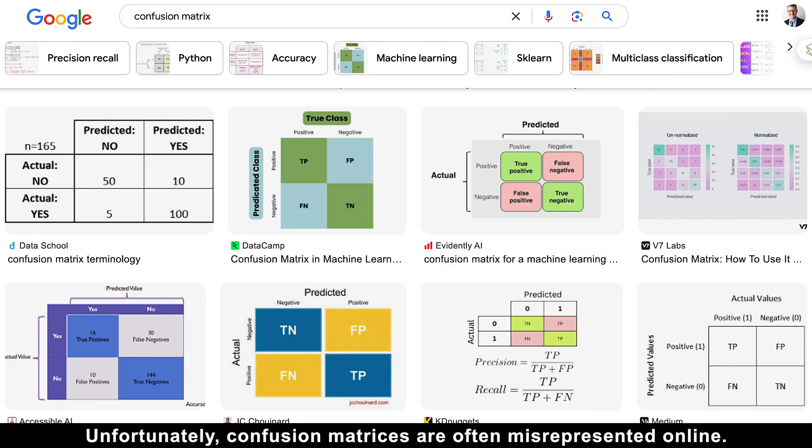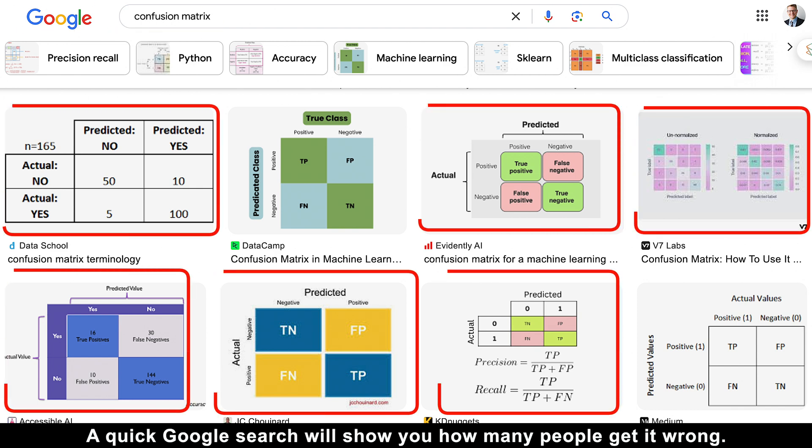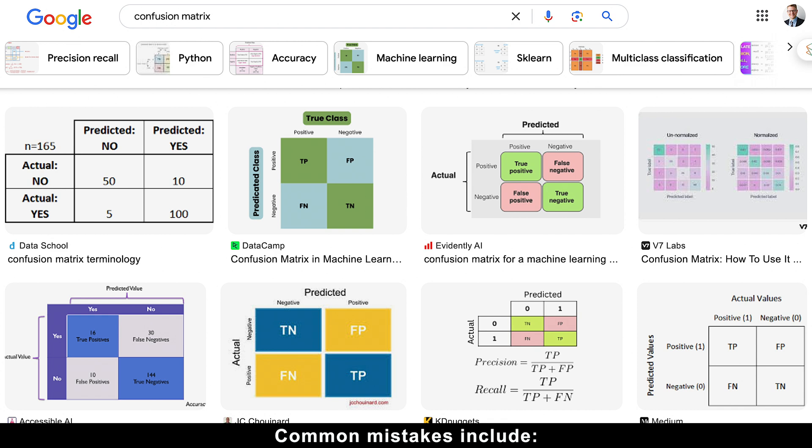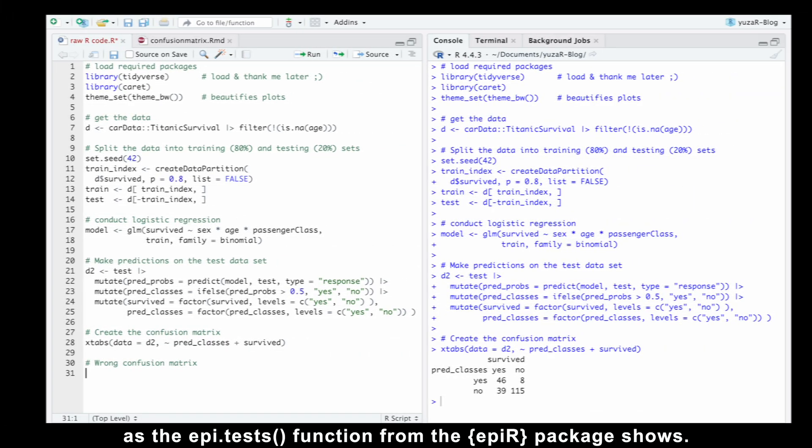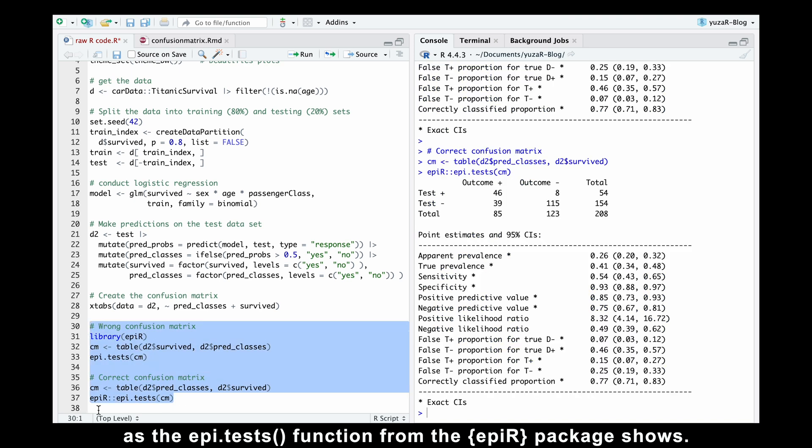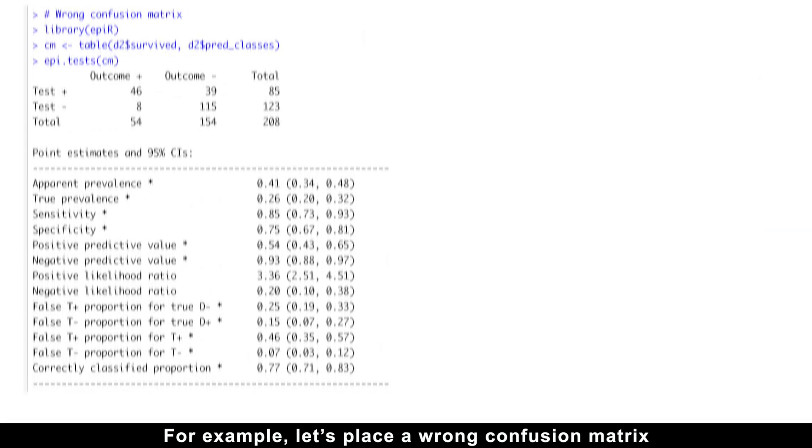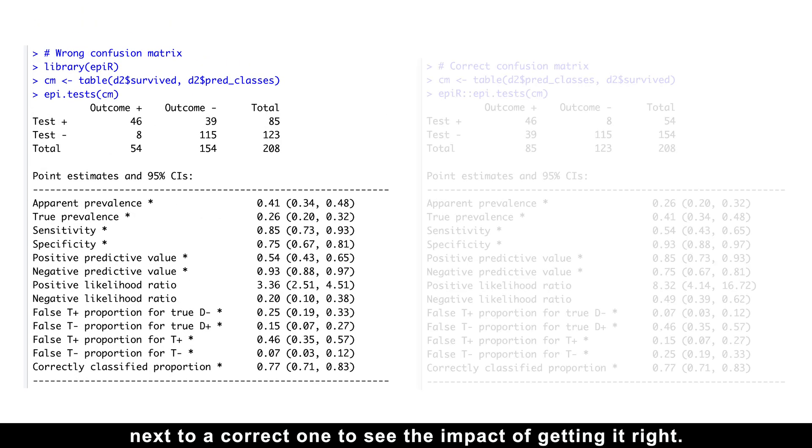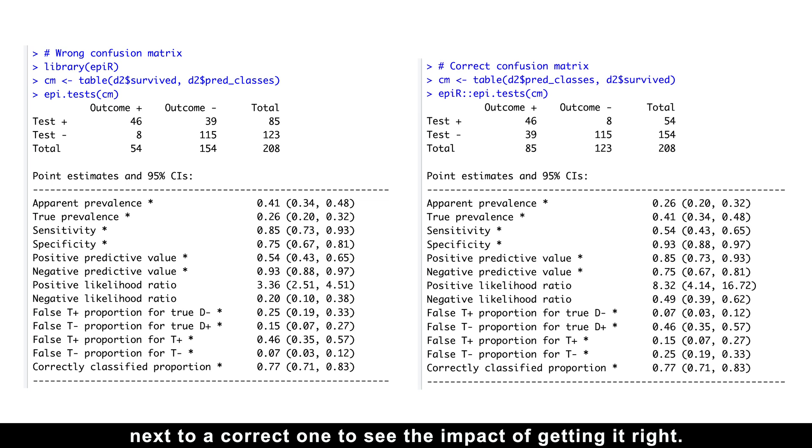Unfortunately, confusion matrices are often misrepresented online. A quick Google search will show you how many people get it wrong. Common mistakes include placing true values in the rows instead of the columns and putting negative outcomes on the left instead of the right. These errors can completely mess up your results, as the epitest function from the APR package shows. For example, let's place a wrong confusion matrix next to a correct one to see the impact of getting it right.